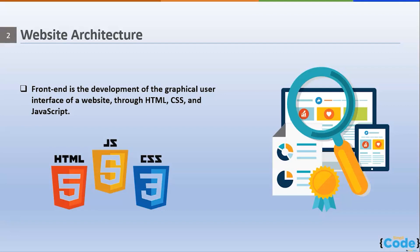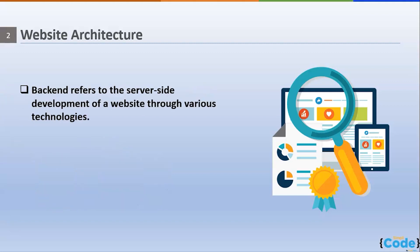HTML, CSS, and JavaScript are the three most popular technologies responsible for the development of the graphical user interface. Their combination gives a smooth and appealing user experience. On the other hand, anything the user doesn't see but exists on the server is the back-end. When we visit a page, the server goes through the database and sends a response back to the browser.